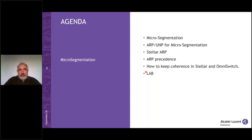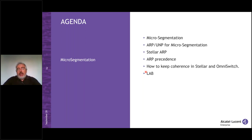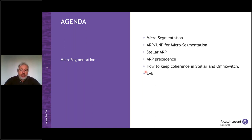Let's start. This is the agenda for today's webinar. We will be covering several topics for around 45 minutes. We'll be looking at micro segmentation — a concept we're exploring that is coming from the cloud service provider and virtualization world — and bringing it down to the network side to see the benefits. We'll also focus on Stellar product range and the OmniSwitch product range, with today focused on the Stellar part.